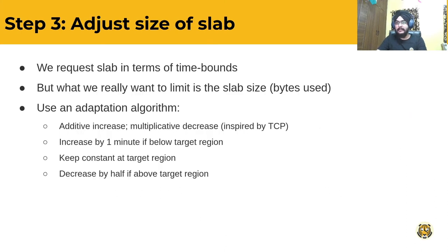Data migrations can range from a few megabytes to several petabytes. PromMigrator knows that migrations can be memory intensive. For this reason, PromMigrator aims for a target memory usage in such a way that there is a perfect balance between the speed of data migration and the utilization of memory. It follows an additive increase of time range when below the target memory region, and a multiplicative decrease when memory usage exceeds the target region. When within the target region, the time range remains constant.